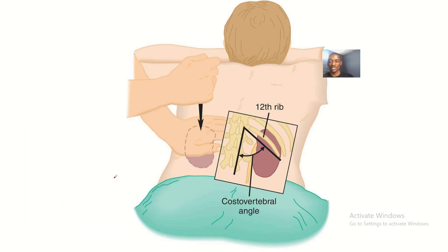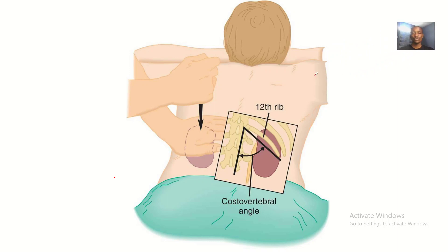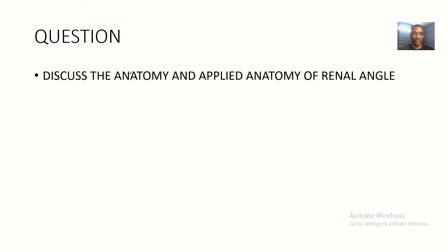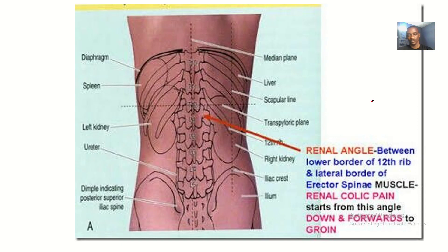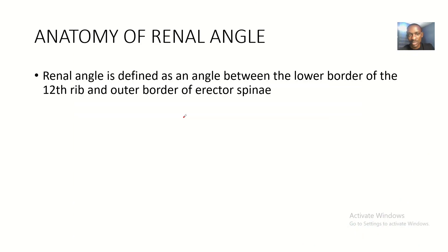Welcome guys. I'll be talking about the structure of the back — specifically the renal angle. The renal angle is important in diagnosing the kidney. We'll cover what it is, that's the anatomy, and what it's used for, that's the applied anatomy. So the topic is the anatomy and applied anatomy of the renal angle.